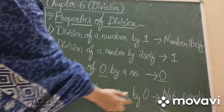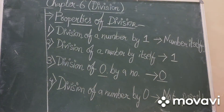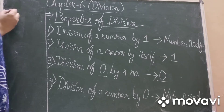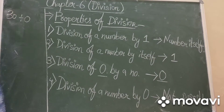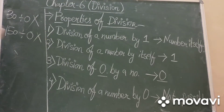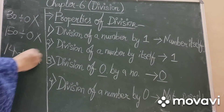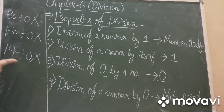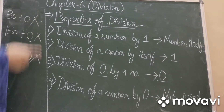Fourth property: division of a number by zero. Agar aap kisi number ko zero se divide karenge, it is not possible. You have to remember this. For example, 30 divided by zero — not possible. 150 divided by zero — not possible. 14 divided by zero — not possible. Kabhi bhi koi bhi number zero se divide nahi ho sakta.